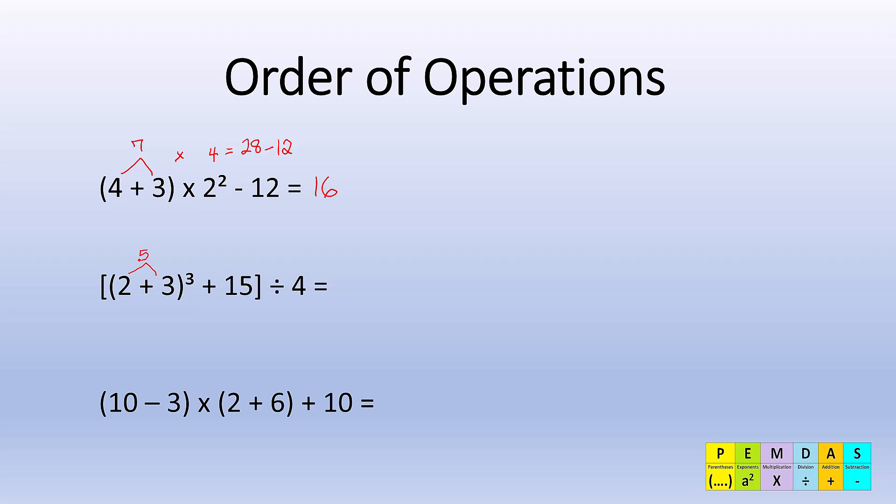Now 5 to the third power is the same as 5 times 5 times 5. 5 times 5 is 25, 25 times 5 is equal to 125. So 5 to the third power gives me 125. Now I can finish whatever is inside the bracket, which is 125 plus 15, and that gives me 140.